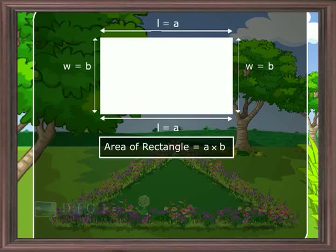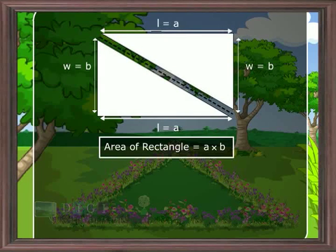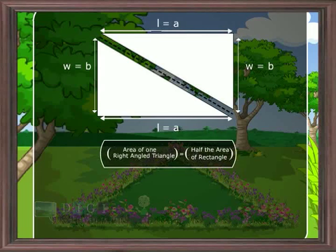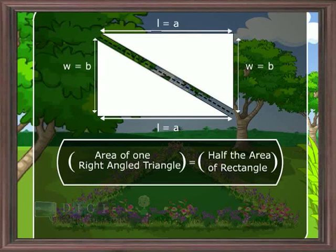The area of a rectangle is a into b. Now let us cut the rectangle along its diagonal. It will divide into two equal right angled triangles. Because of symmetry, the area of one right angled triangle is equal to half the area of that rectangle.